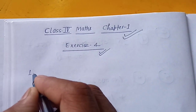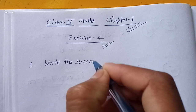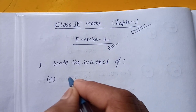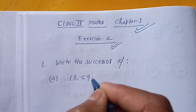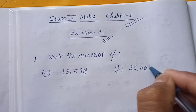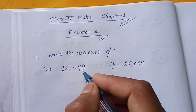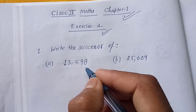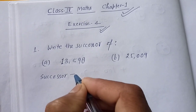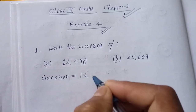Question number 1 of this exercise is: write the successor of — part A: 13,598, part B: 25,009. To find the successor, we need to add one to the given number. So for 13,598, we add 1.